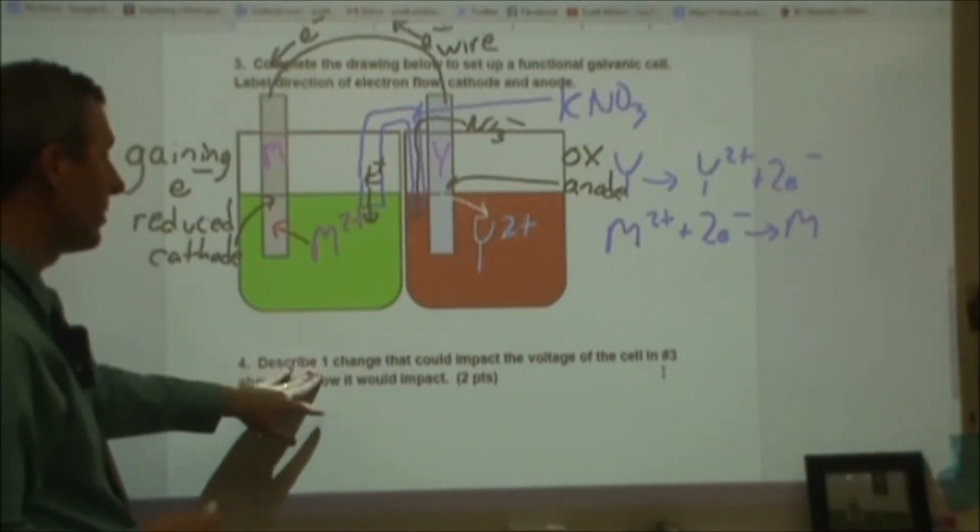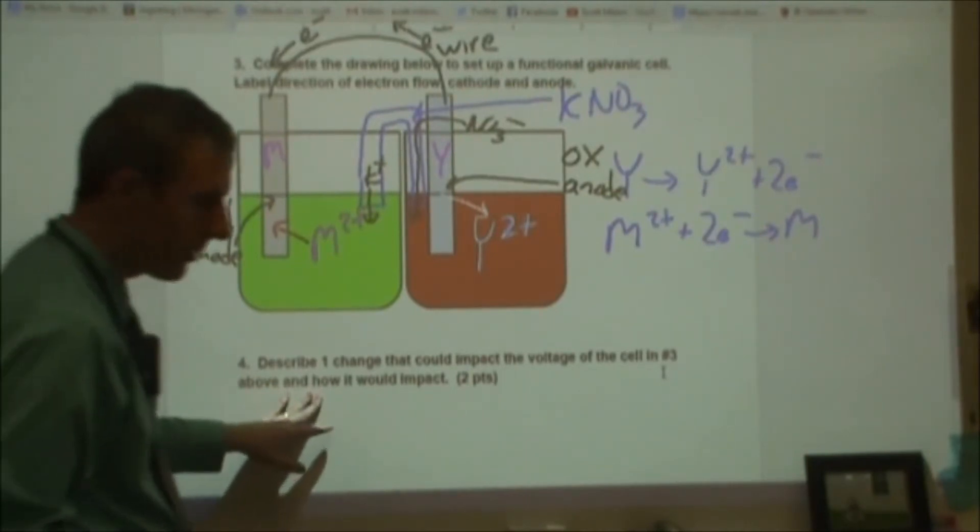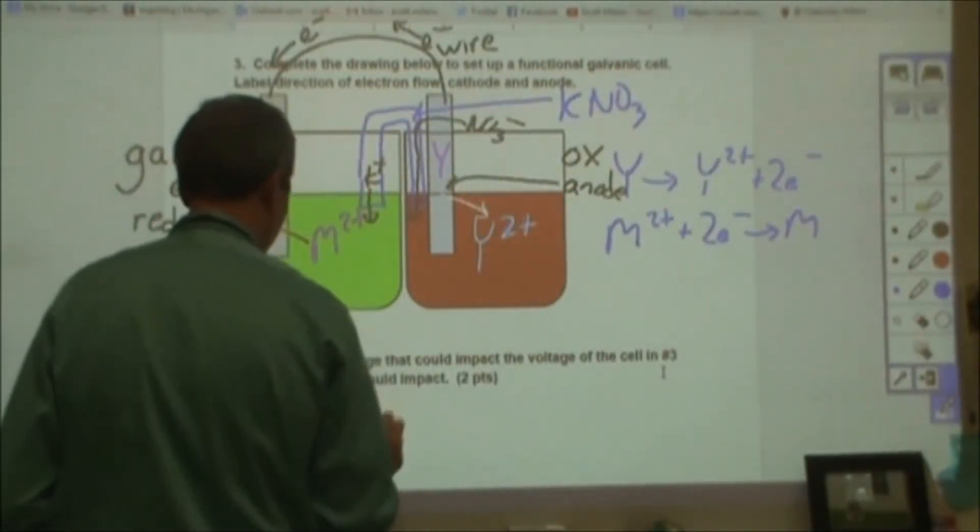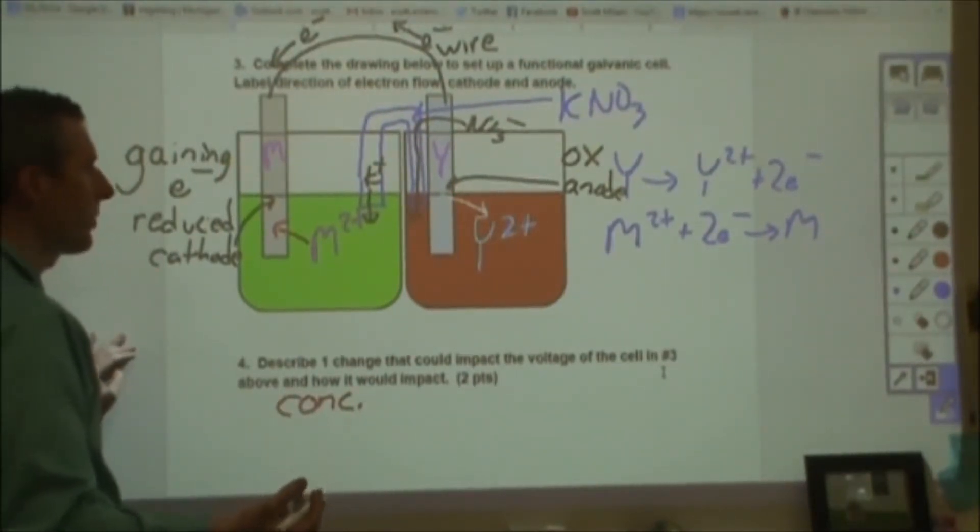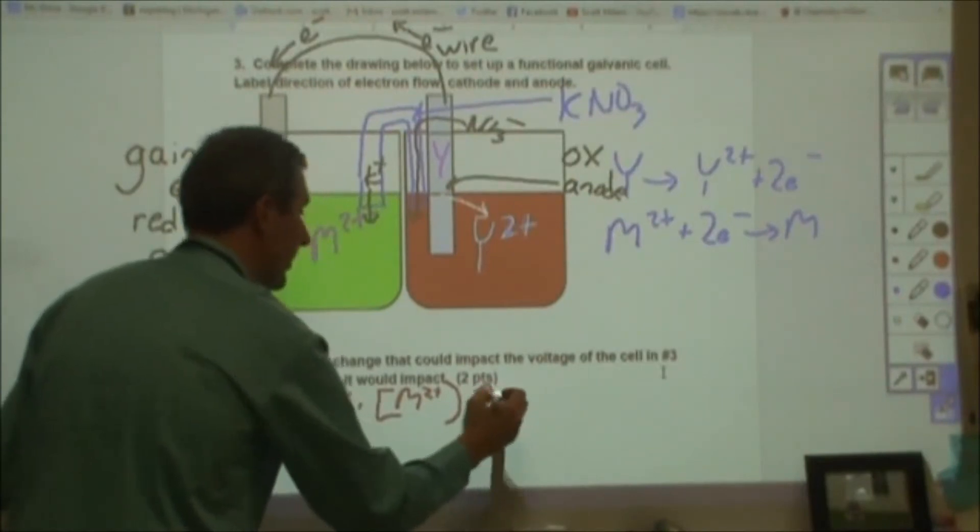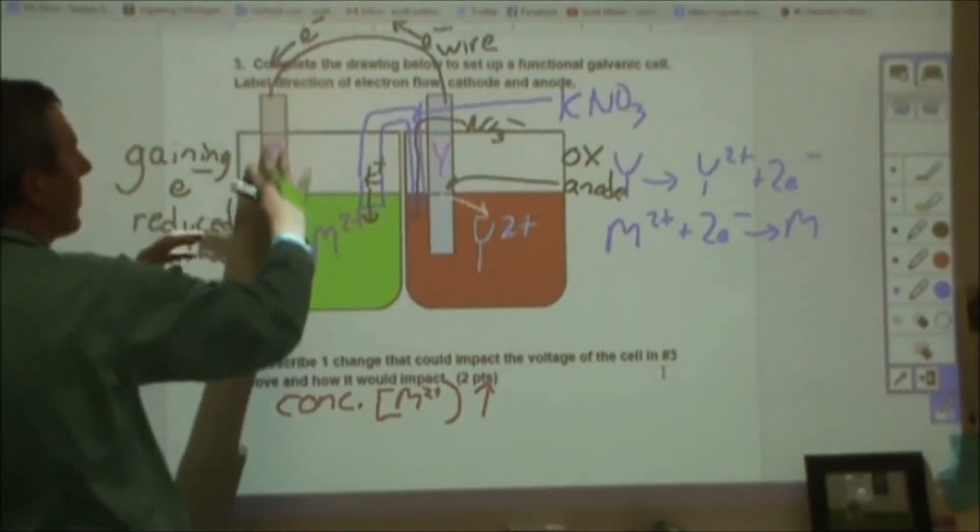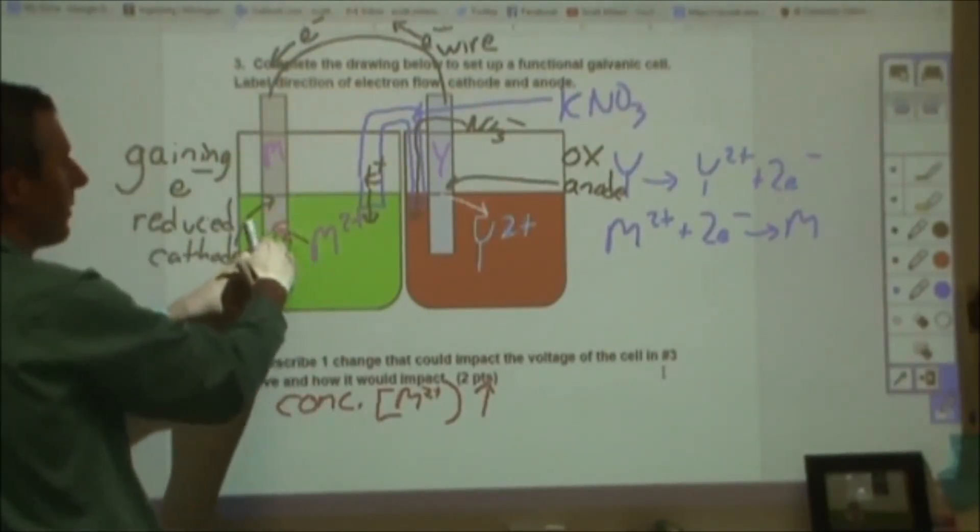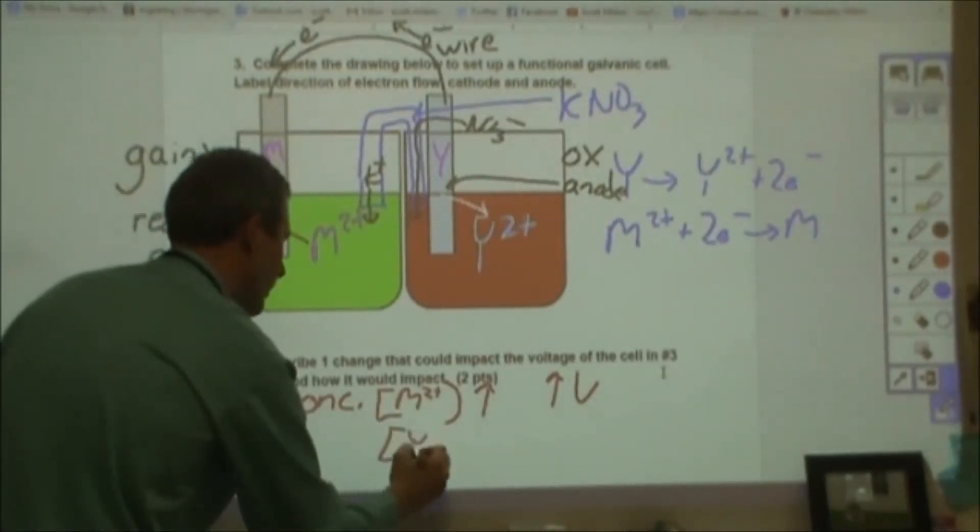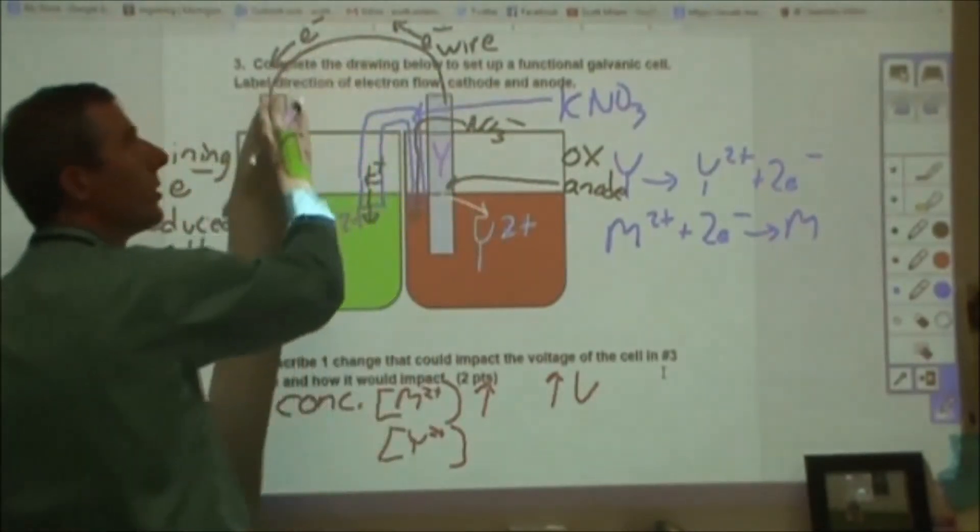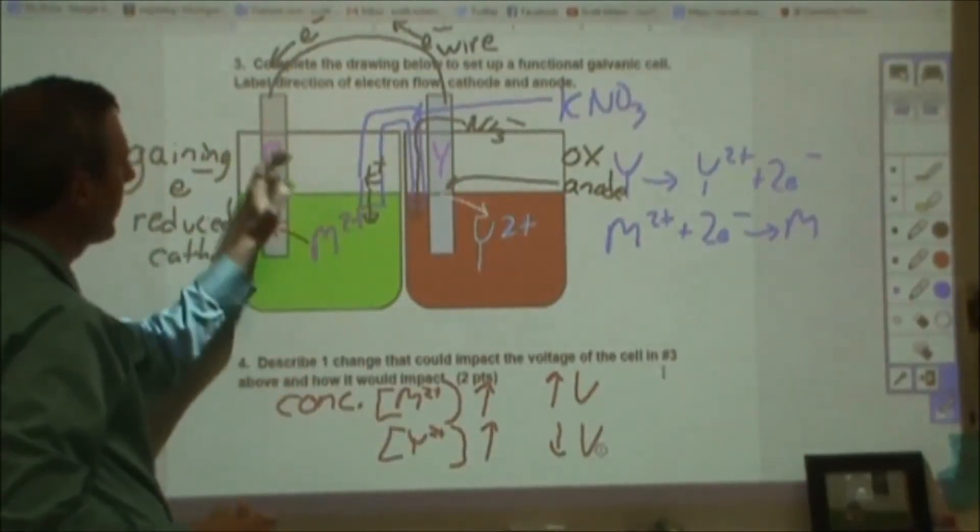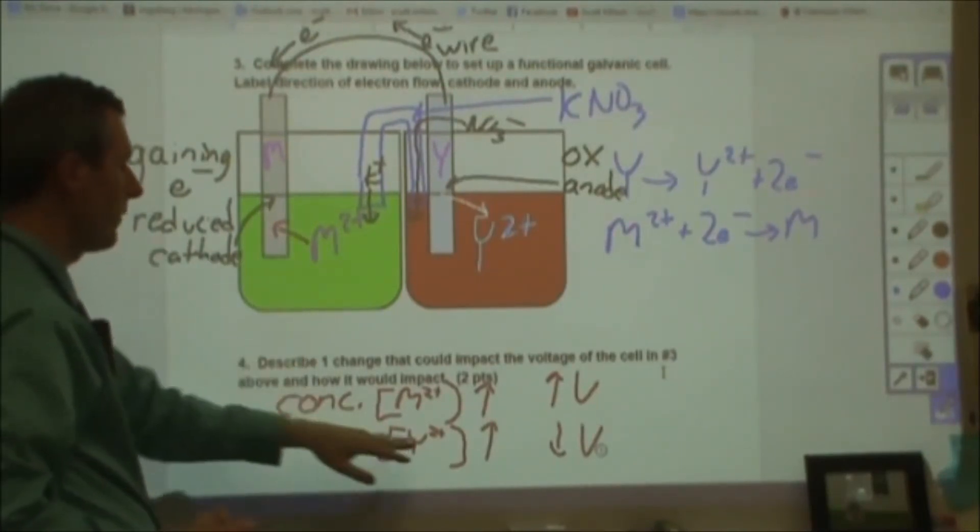In number four, it says describe one change that could impact the voltage of the cell in number three and how it would impact. So there's two answers you can give for this. One I'm pretty clear on and one I'm not. The easy one is concentration. Concentration will affect the voltage on this. You can justify that with Nernst's equation. I prefer to go through a physical route. So let's say I took M2+ concentration and I increase it. Well, what that's going to do is then the M2+ is then pulling the electrons more than it was before. I had more positive charge pulling on that than I did at the surface of this metal. So that's going to increase the voltage. Now if instead of that I had increased the Y2+, now I've got more positive charge over here pulling these electrons that are trying to go in the other direction. So that, if I increase that, would decrease the voltage. And then if I decrease the concentration here, I'd have less positive charge pulling on those electrons. That would then decrease the voltage. If I decrease this, the voltage would go up.